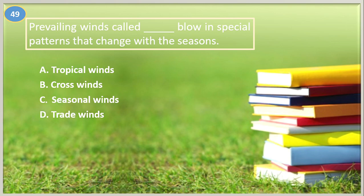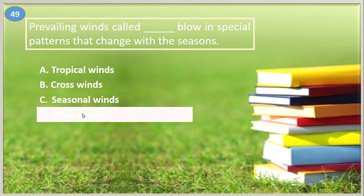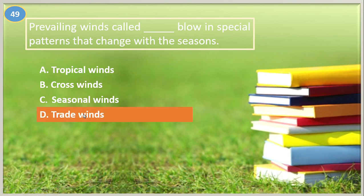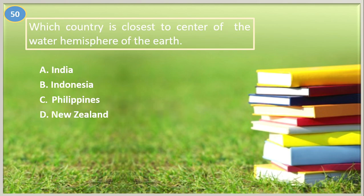Number forty-nine. Prevailing winds — cold blank — blow in special patterns that change with the seasons: A. Tropical winds, B. Cross winds, C. Seasonal winds, D. Trade winds. The answer is letter D, Trade winds. Trade winds are known for their consistency in force and direction, which is why they served as a guide for traders in ancient times.